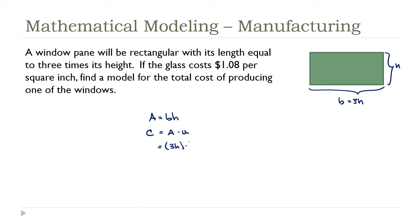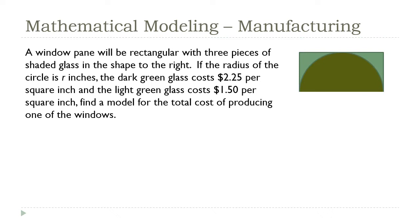The area is the base — that's 3h — times the height h, times the unit cost of 1.08. Cleaning this up: 3 × 1.08 = 3.24, and h × h = h². Using function notation, c(h) = 3.24h². That's my cost function based on the one parameter the manufacturing department gets to choose when building one of these window panes.